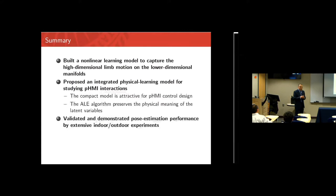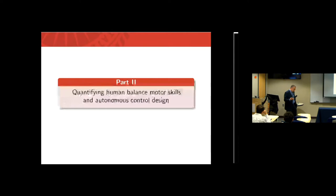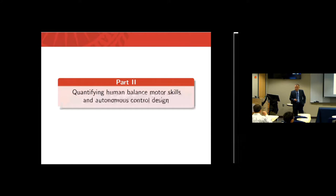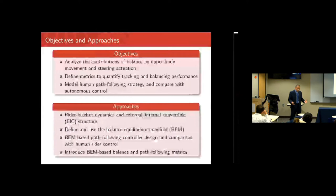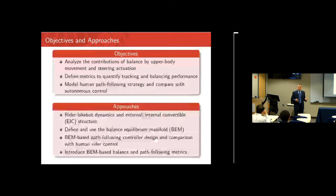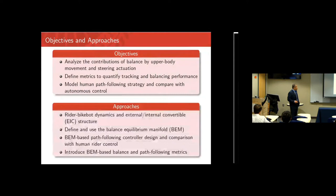We've combined learning and physical models — now the second part: can we use the model to quantify motor skills? We know humans balance the bike using upper body movement and steering, but which one is used more and which is more effective? We define a metric for good versus bad riders. There are two tasks: following a trajectory and maintaining balance — sometimes competing. We also want to compare human performance with an autonomous controller.